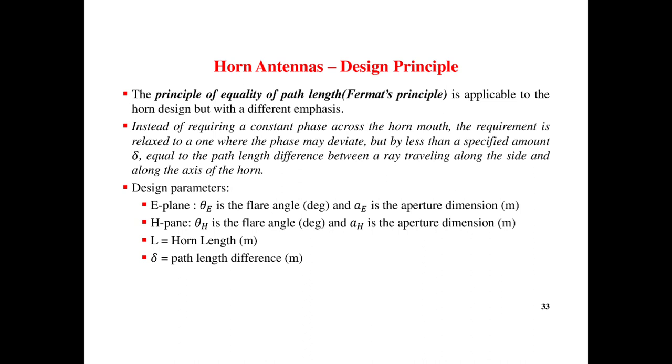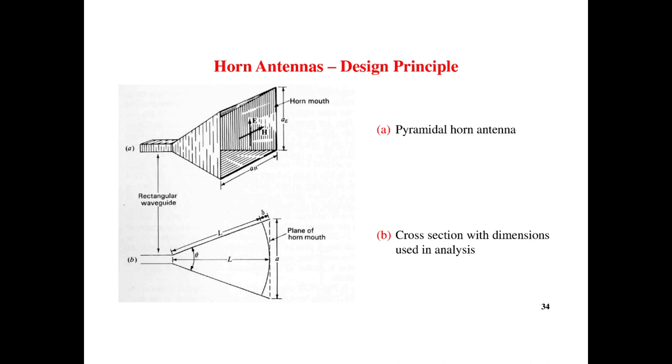Design parameters: E-plane, delta E is the flare angle and AE is the aperture dimension. For H-plane, delta H is the flare angle and AH is the aperture dimension. L is the horn length. Delta is the path difference. Pyramidal horn antenna cross section. Here we can see the different types of horn antenna design principle.